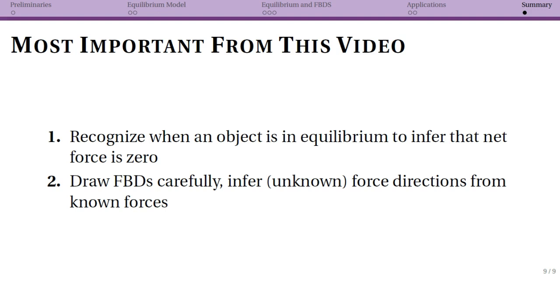So from this video I want to highlight two main points. First is that you need to recognize when an object is in equilibrium, and that means either at rest staying at rest or moving in a straight line at a constant speed. Once you recognize equilibrium, you can infer that net force is zero and that you are then using the equilibrium model to solve the problem. Remember that you should always be drawing your free body diagrams carefully. I went through that in detail in previous videos. And you can begin to infer the unknown force direction from the known forces by knowing that the vector sum of all of the forces must be zero if your object is in equilibrium.